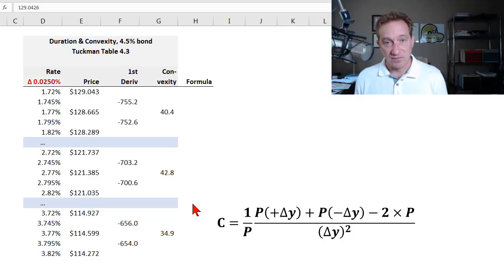To illustrate effective convexity, I've rebuilt Tuckman's Table 4.3, which uses a bond with a 4.5 percent coupon. I believe the remaining term to maturity is about seven years for this bond that's being illustrated, and my numbers don't exactly match. They're pretty close.